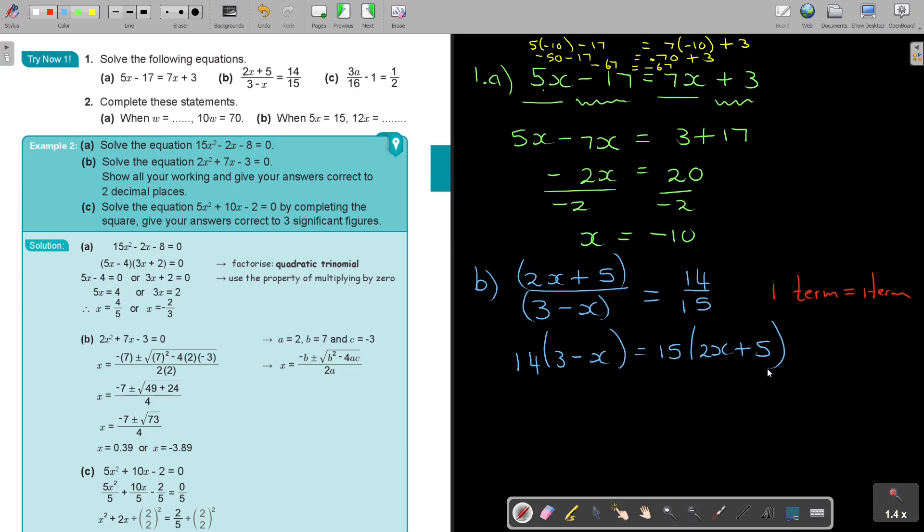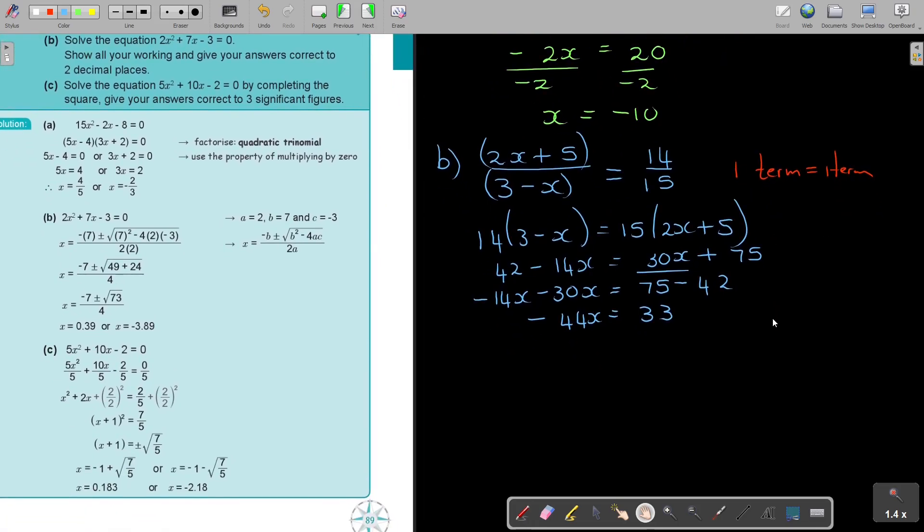So if I'm starting with that, this 14, I'm going to multiply it with 3. So I'm getting 42 minus 14x. And this one, I get 30x plus 75. I'm taking it over. So it's 75 minus 42. So just be careful. It's a negative. So it's going to be negative 44. And this one is going to be 33. Then I'm going to divide by negative 44. And I'm getting that the value of x, if I simplify, 11 can divide into that. So 3 times, 4 times. So it's negative 3 quarters. And that's my answer.